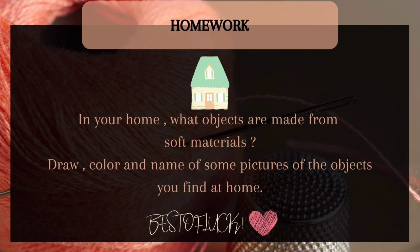Okay class, this is your homework for today. In your home, find objects that are made from soft materials. Draw, color, and name some pictures of the objects you find at home. Try to find at least 5 objects with soft textures. Miss has mentioned some examples — find similar objects at home, draw them, color them, and write their names in your science book.